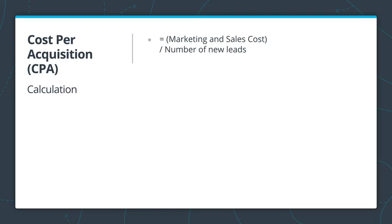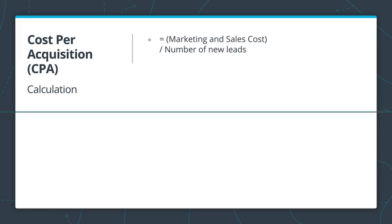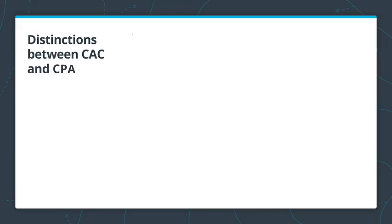You calculate it by dividing the marketing and sales cost by the number of new lead customers. If you're feeling confused about CPA and CAC at this point, don't worry — it confused me too. Let's go over the difference between these.